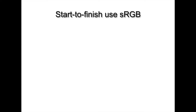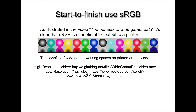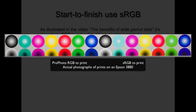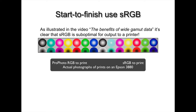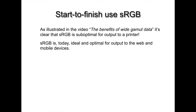The first misconception is the idea that you should use sRGB start to finish. I did a video called 'The Benefits of Printing in Wide Gamut Data,' available on my webpage and YouTube. If you view that video and go through the testing procedures using the file I provided, you'll see that sRGB is absolutely sub-optimal for output to a printed device. Depending on the color gamut of the device, those sub-optimal results may be very significant. sRGB is really ideal for one output use today: the internet, web, and mobile devices.